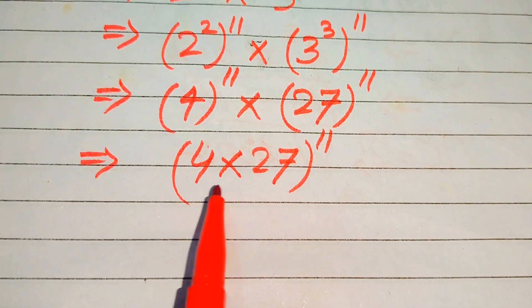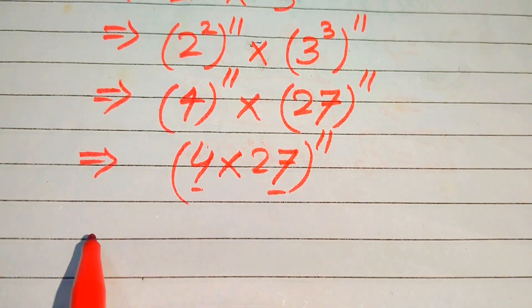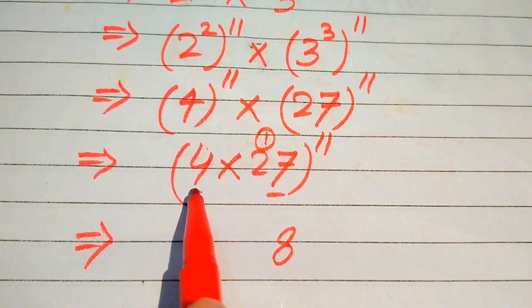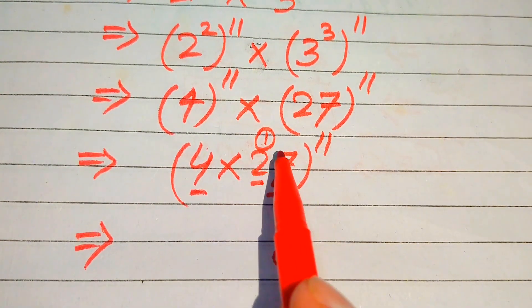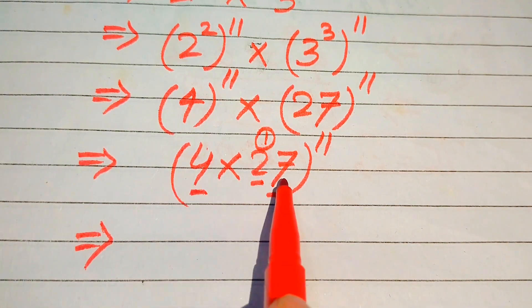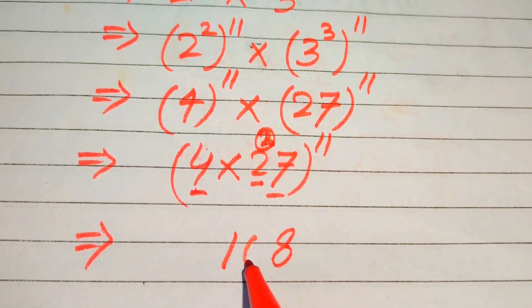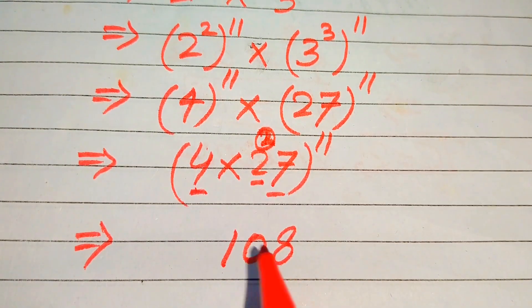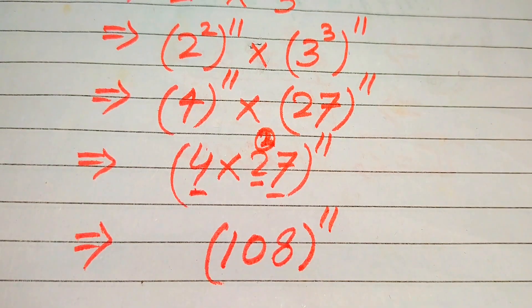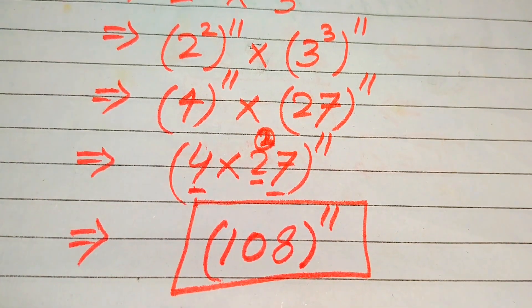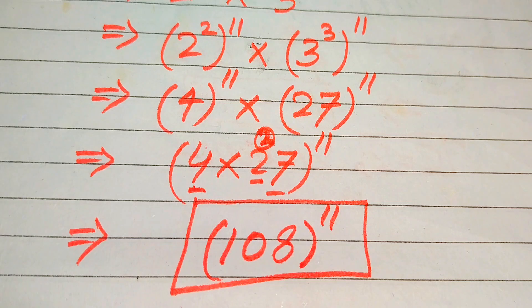Our next target is to multiply these two numbers: 4 times 27. We get 4 times 7 equals 28, write 8 and carry 2; then 4 times 2 is 8, plus 2 gives 10. So we get 108 to the power of 11. This is the final answer from the second method. Both methods give the same answer: 108 to the power of 11. Thank you so much for watching this video — please subscribe to my channel for more exciting videos.